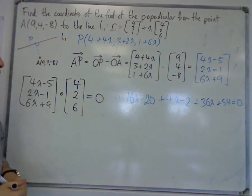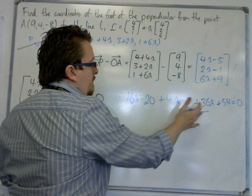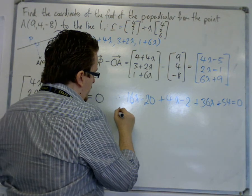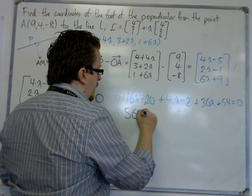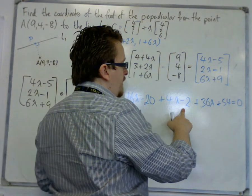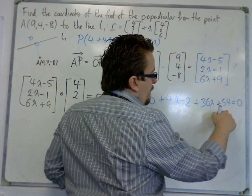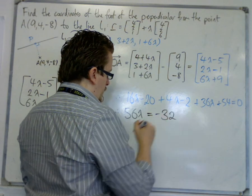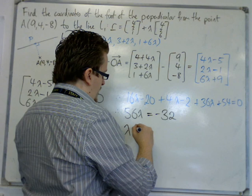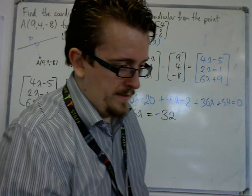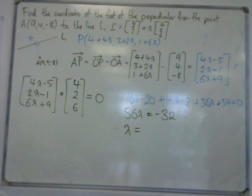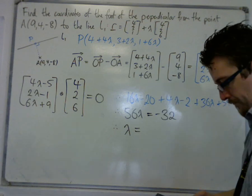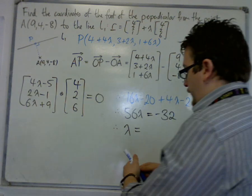So I need to tidy this up. I've got 36 lambda, 40 lambda, 56 lambda. Take away 20, minus 20, take away 2 is minus 22, add 54 is 32. So that's minus 32 on the right-hand side. So lambda is equal to minus 32 over 56, which is minus 4 sevenths.